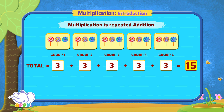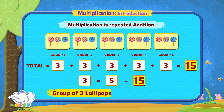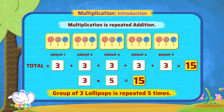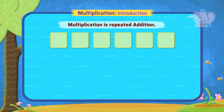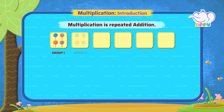We write three times five equals fifteen, because a group of three lollipops is repeated five times. Fine! Now let's do one more. We see four lollipops, each in six groups.